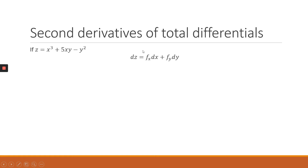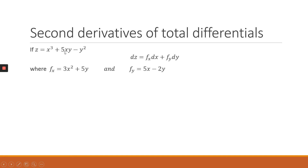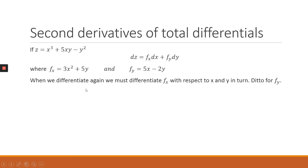We find the first total differential dz. The partial derivative of z with respect to x is 3x² + 5y. The partial derivative of z with respect to y is 5x − 2y.